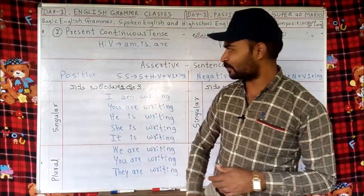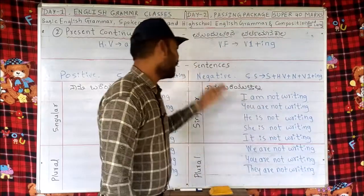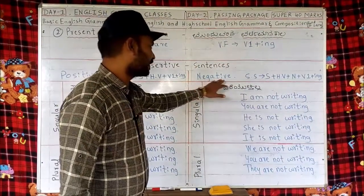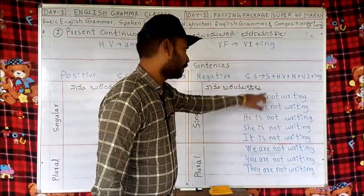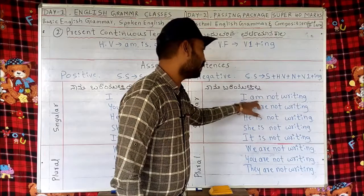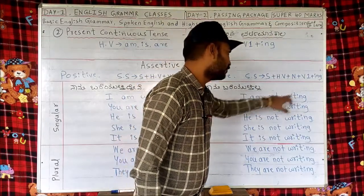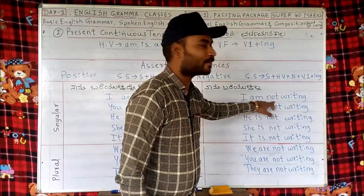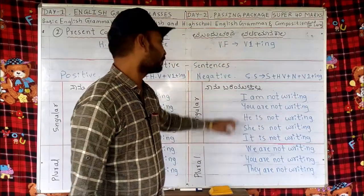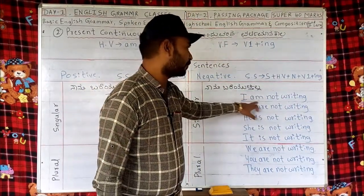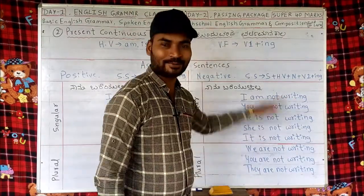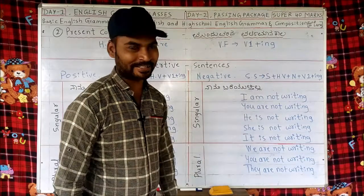Positive sentences are over. Now let's look at negative sentences. Sentence structure: first we write subject, then helping verb, then the negative form 'not', then V1 plus ING. Subject, helping verb, not, V1 plus ING — this is the structure of negative sentences.